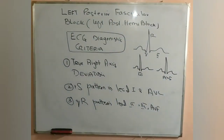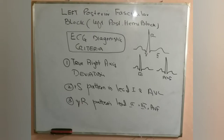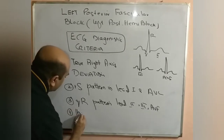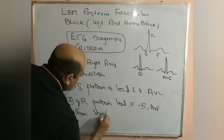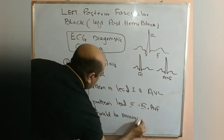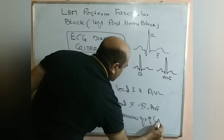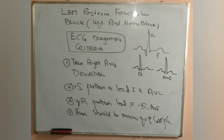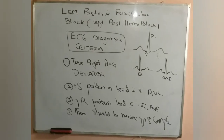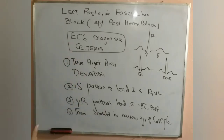So, summarizing the three criteria so far: first, true right axis deviation between positive 90 and positive 180; second, small R and deep S wave pattern in lead 1 and AVL; third, small Q wave and large R wave pattern in lead 2, 3, and AVF. Fourth, there should be a narrow QRS complex — in the majority of cases, left posterior fascicular block causes a narrow QRS complex. Lastly, there should not be any other cause of right axis deviation.